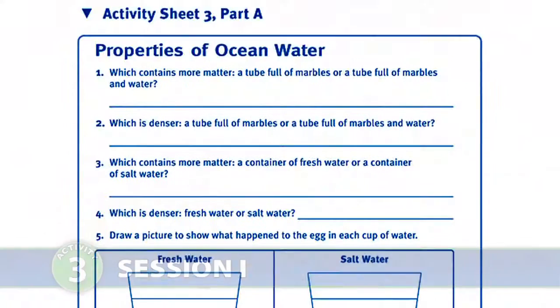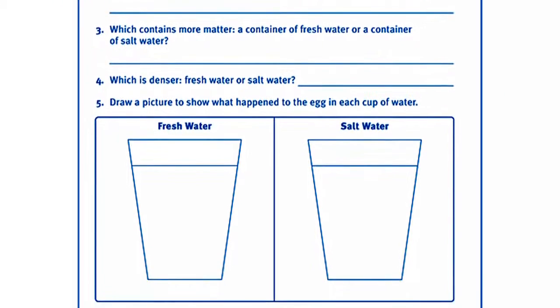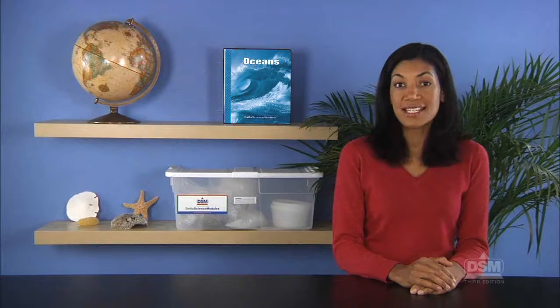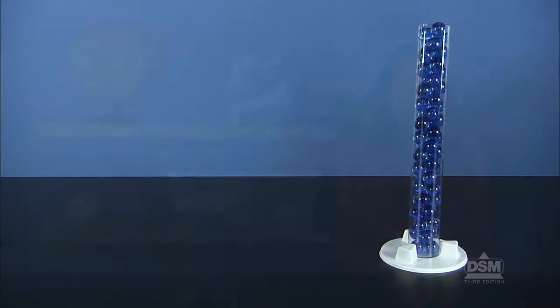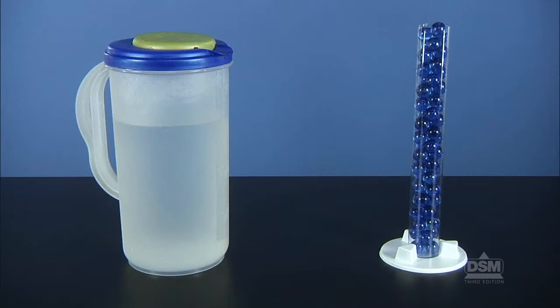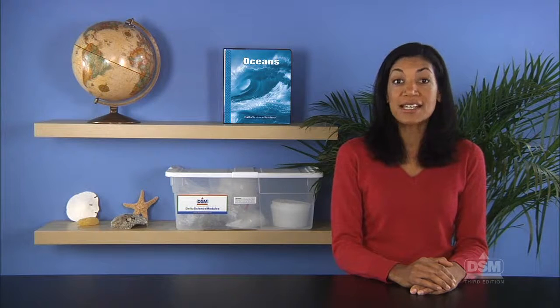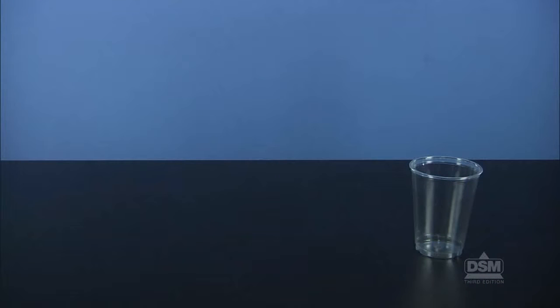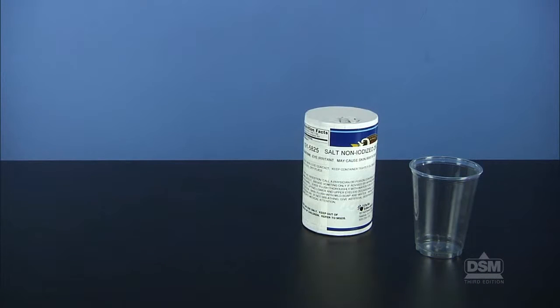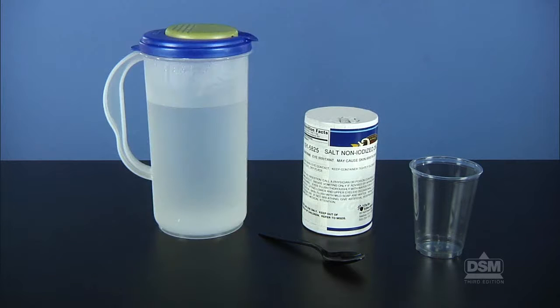To prepare for Session 1, make a copy of Activity Sheet 3, Part A for each student. To demonstrate density for the class, you will need a tube filled with marbles and some tap water. To demonstrate buoyancy, you will need a clear plastic cup, table salt, a plastic spoon, some tap water, and an egg.